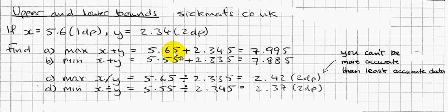which gives you 7.995. So the maximum of x was 5.65, the maximum of y is 2.345. And the same sort of trick in reverse: if I want to find the minimum, I have to find the minimum of each of these, adding them together, and that's it.